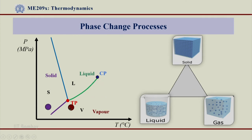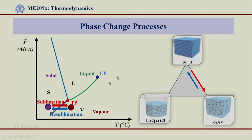Let us now come to the solid to vapor phase change process. If a point lies in a low pressure and low temperature region and the temperature is increased, solid can be directly transformed into vapor, and this process is called sublimation. This solid to vapor phase transition happens across the SV saturation line. The reversal of this is what we call desublimation. So solid to vapor is sublimation, and the reverse is desublimation, as also shown on the triangle.